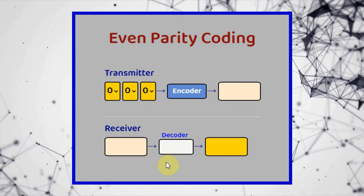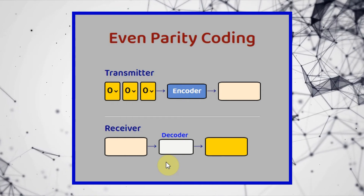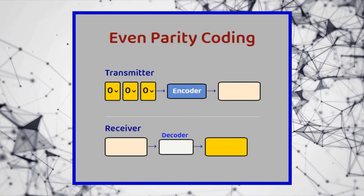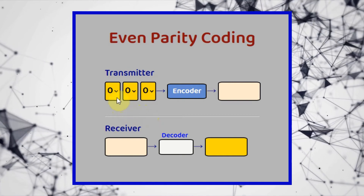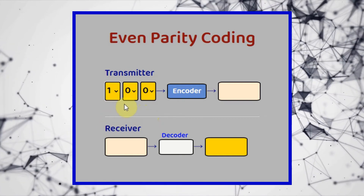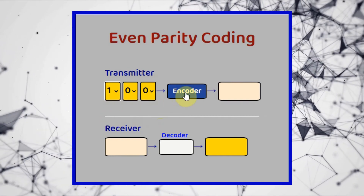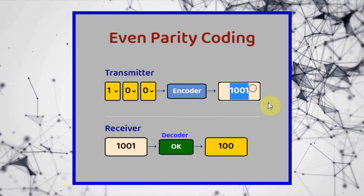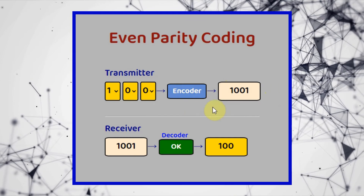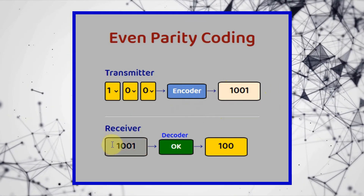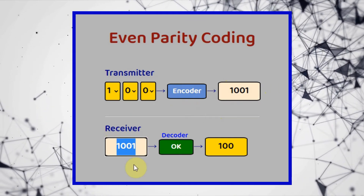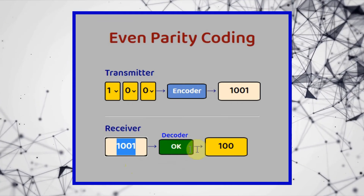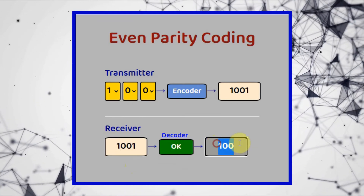Keep in mind that the code will fail when we have two or more errors. Let's say we want to transmit the message 100. We click on the encoder. This is the generated codeword, and you can see that the received codeword is the same as the transmitted. So the decoder says it's OK and extracts the message.